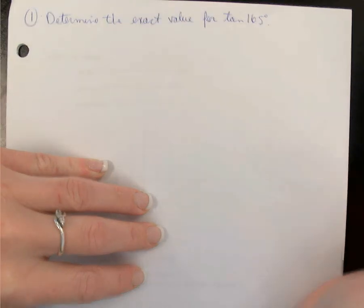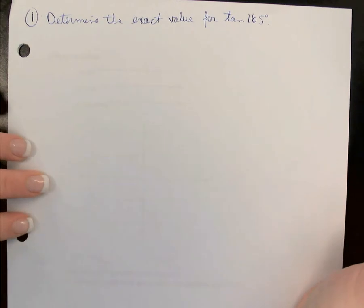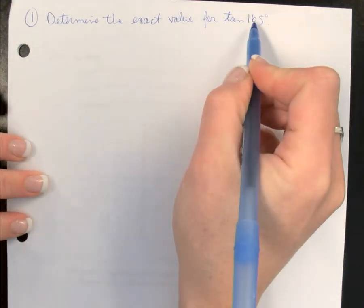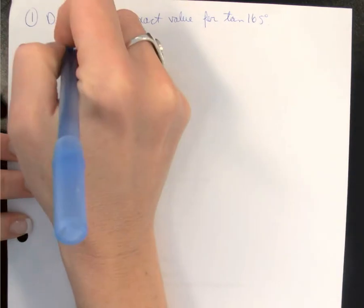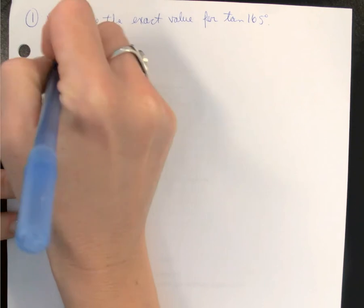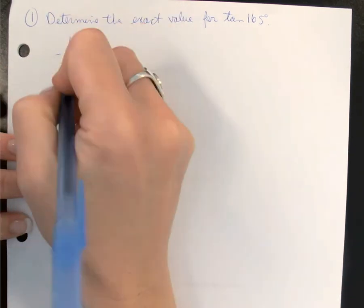Determine the exact value for tan of 165 degrees. We're going to work in degrees since this is in degrees. We can choose to change it to radians if we want. But because this ends in a 5, I know that 45 must go into that out of my special angles. So if we subtract, we get 120.